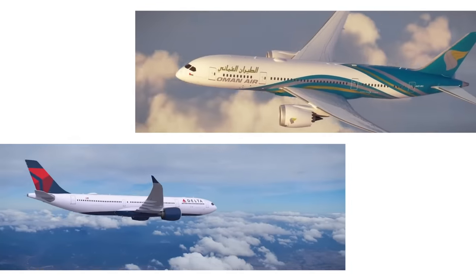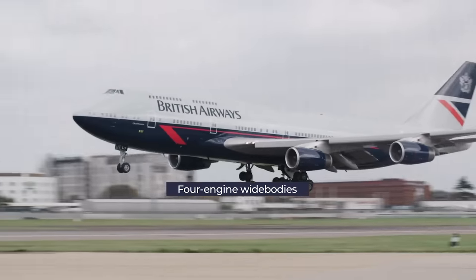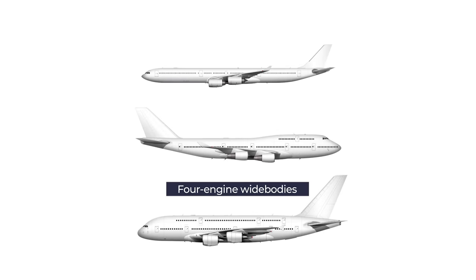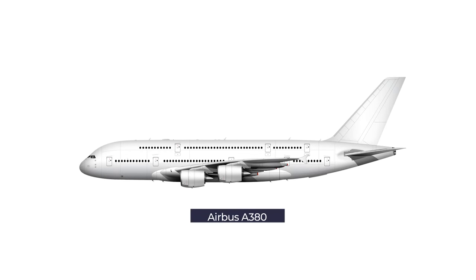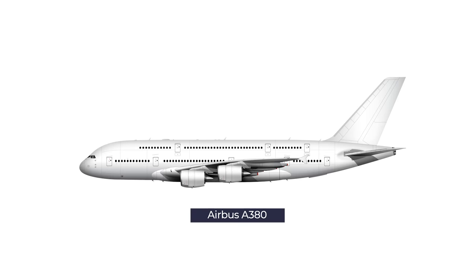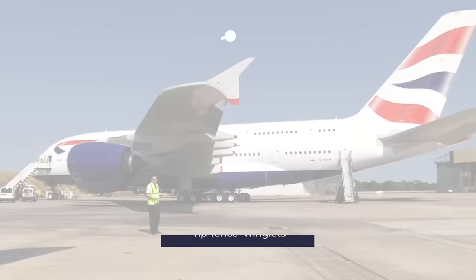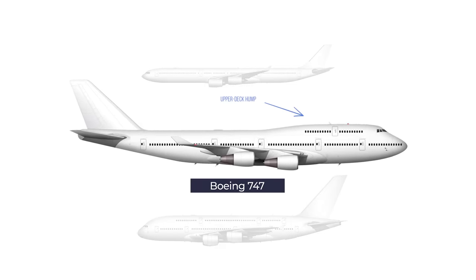Now that some broad generalizations are out of the way, let's drill down into the specifics of each aircraft. We'll start with the simplest to identify — four-engined widebodies. There are only three four-engine aircraft types in common commercial service. The A380 is the newest and quite easy to identify with its two full-length passenger decks. A straight line from the cockpit to the tail with two rows of windows should give it away. The 747 needs little introduction with its iconic partial second-deck hump.